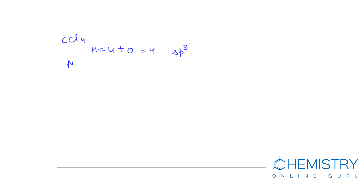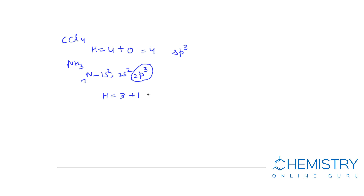Another example is ammonia (NH₃). The atomic number of nitrogen is 7. Nitrogen forms 3 sigma bonds with 3 hydrogen atoms using 3 electrons, and one lone pair of electrons is present in the 2s2 orbital. So H equals 3 plus 1, which equals 4. When H equals 4, hybridization is sp3.